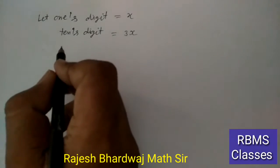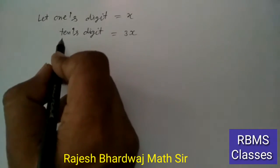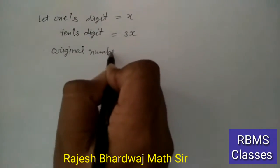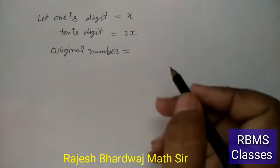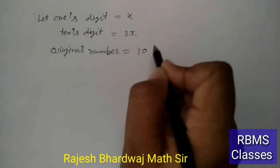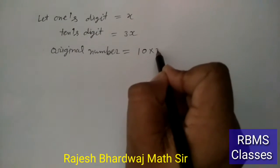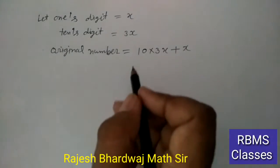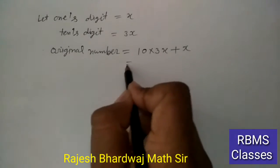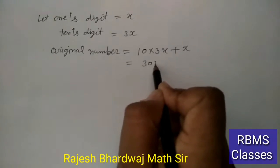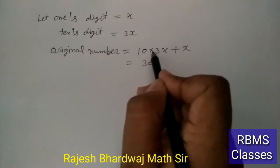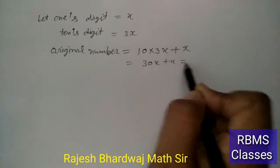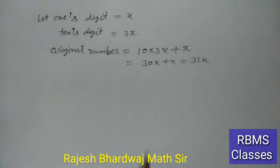अब यहां से हम original number लिखेंगे। Original number = 10 into tens digit + ones digit = 10×(3x) + x = 30x + x = 31x। ठीक है?